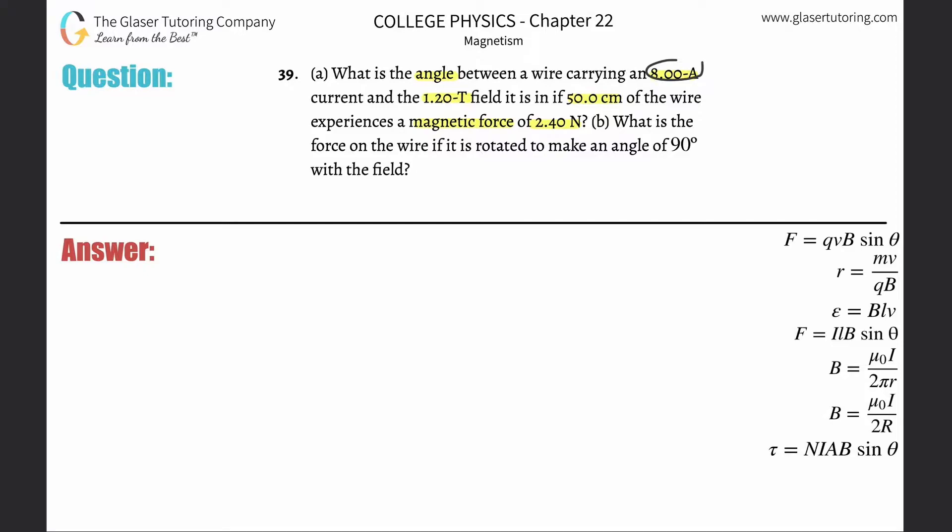Anytime you start talking about currents, magnetic fields, forces, right angles, all this stuff, you have to recall this formula. The force on a current carrying wire will equal the magnitude of the current multiplied by the length of the wire, multiplied by the strength of the magnetic field, multiplied by the sine of the angle between the magnetic field and the current.